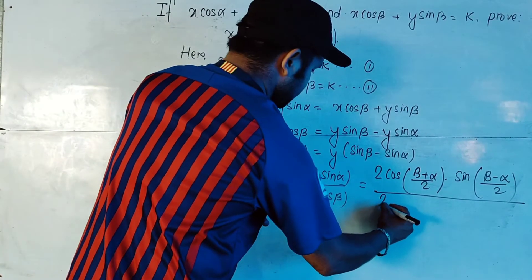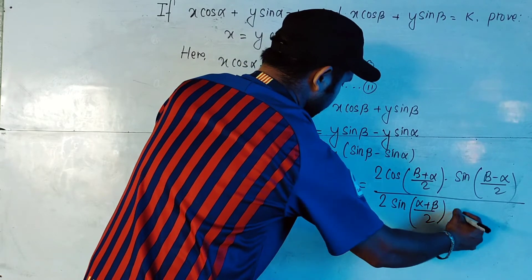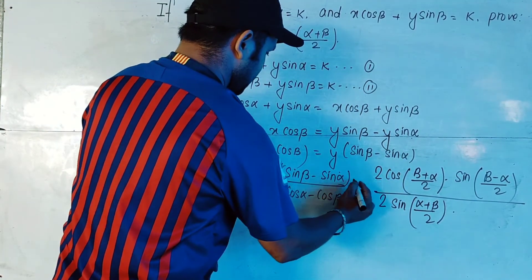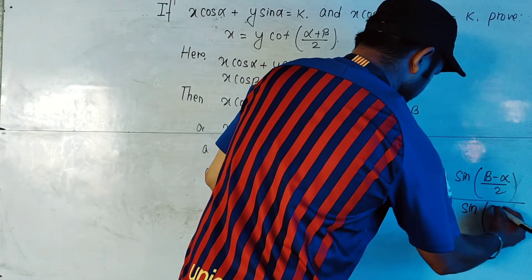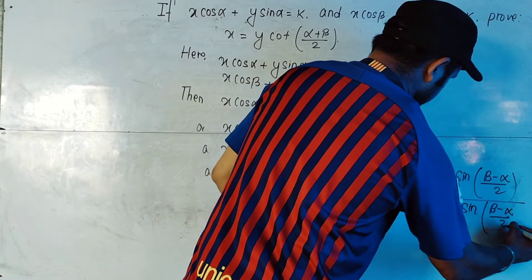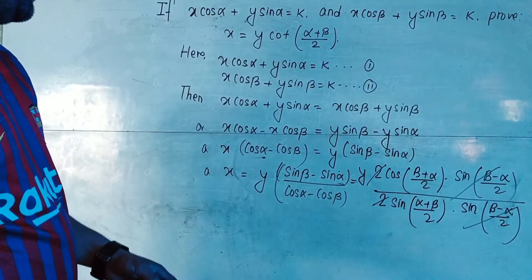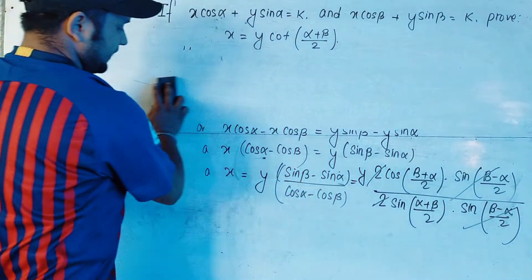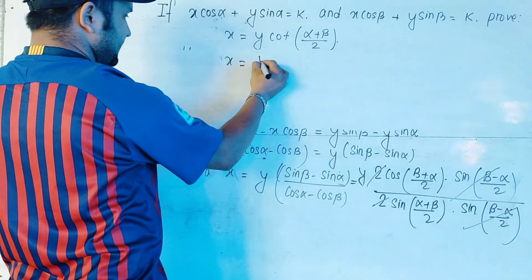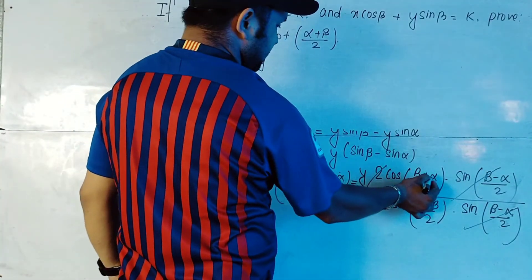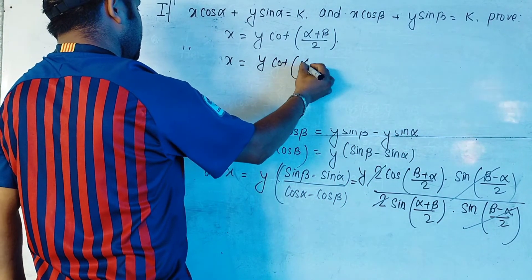The denominator formula gives 2·sin((α + β)/2)·sin((β − α)/2). We also have y carried through. We can now cancel sin((β − α)/2) and the factor of 2 from both numerator and denominator, leaving x = y·cos((β + α)/2) / sin((α + β)/2).